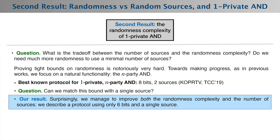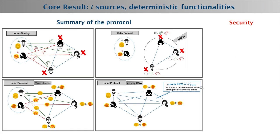Surprisingly, we managed to improve both the randomness complexity and the number of sources, obtaining a protocol that uses only 6 random bits and a single source. This is a result of independent interest for the randomness complexity of AND, but also clarifies the relation between randomness complexity and random source complexity.